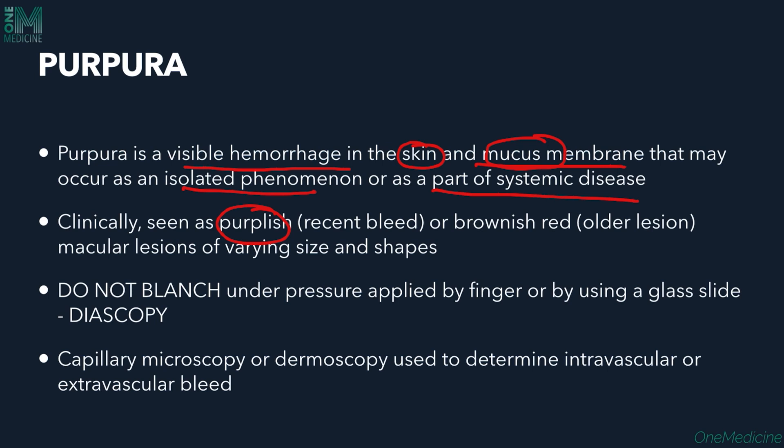Clinically, you see purpura as a purplish color if it is a recent bleed, or as a brownish-red color if it is an older lesion. You'll see macules of varying sizes and shapes — patchy bleeding spots in the skin. The color change from purple to brownish-red occurs because the hemosiderin deposited is degraded over time.